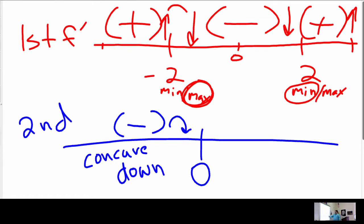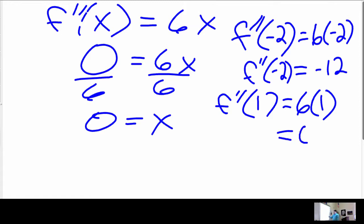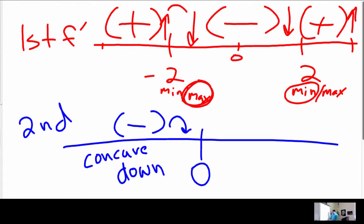Now this might curl up — we already know it will, but we're going to do the math anyway. I need to take a number greater than zero — we'll do one. I can choose one, I can choose a million — whatever. But it's positive. That means concave up.